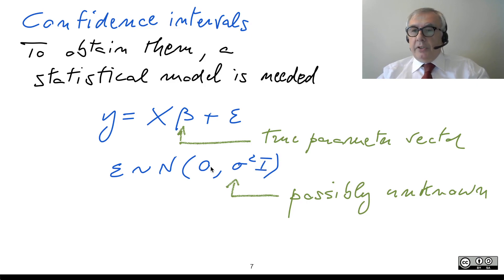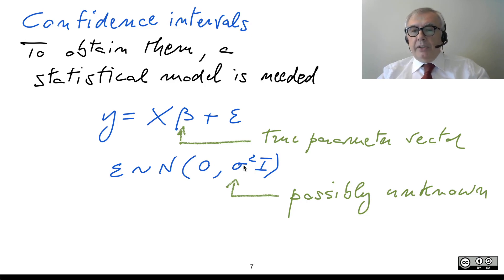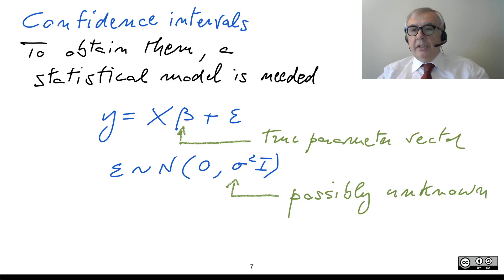This means there is no systematic error — the expectation equals zero. And also it means there is no correlation between the entries of epsilon, meaning the errors associated to different observations are uncorrelated. Since they are assumed to be Gaussian, they are also independent.